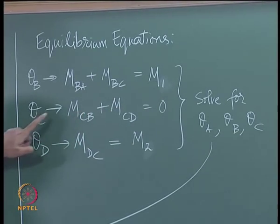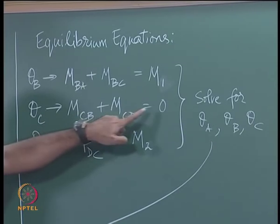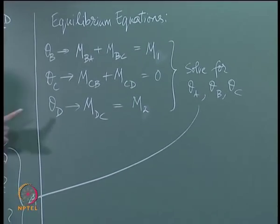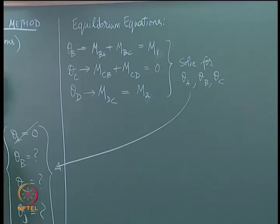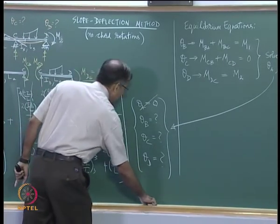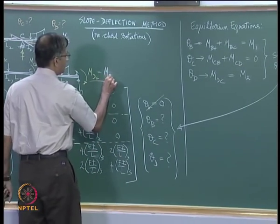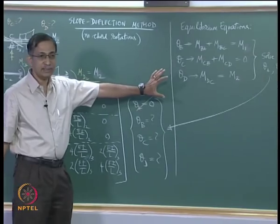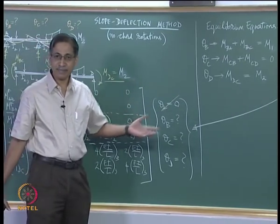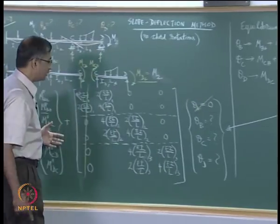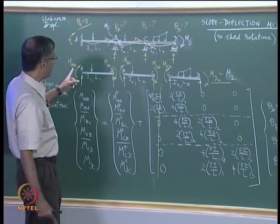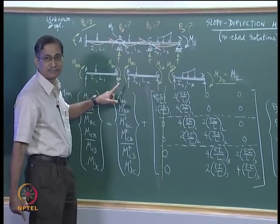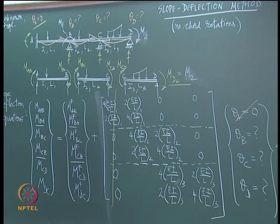You have three equations. Substitute these slope deflection expressions into those equations, giving three simultaneous equations. Solve for the unknown rotations, plug them back into the slope deflection equations to get your end moments. After you have got your end moments, draw the free bodies, draw the reactions, and draw the shear force diagram and bending moment diagram.